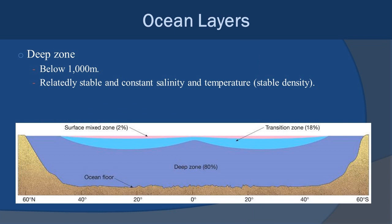The deep zone is usually below 1,000 meters and is generally relatively stable in both salinity and temperature — there may be some fluctuations, but for the most part it's consistent. All of these layers fluctuate slightly and are part of a larger current system we'll discuss later. For now, this is where we'll leave the discussion of how the chemistry of the ocean — specifically salinity — affects ocean layers and how that stratifies the water.